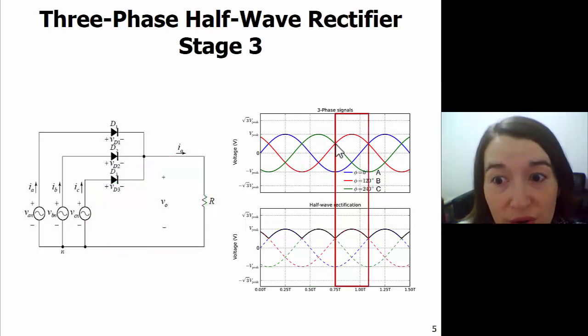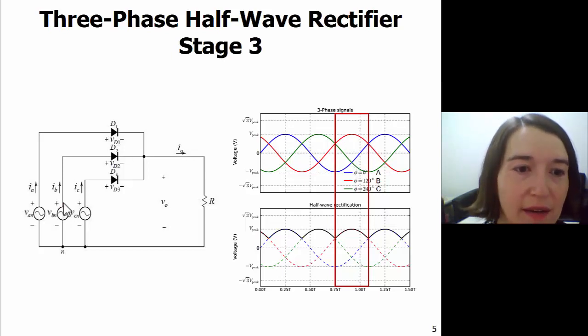Next is the third stage, and this is where B, the red line, becomes the highest. And that's from here to here, so the other voltages are lower. Since B is highest, current is going to flow through diode 2, to our load, and then back around to close the circuit.